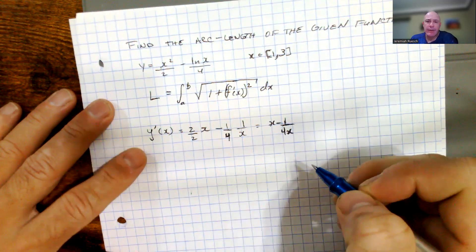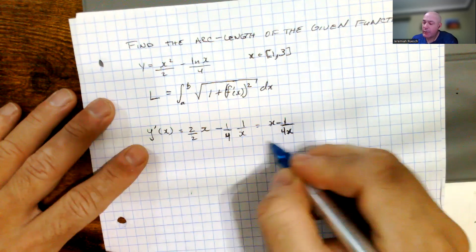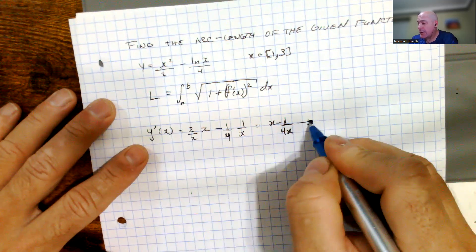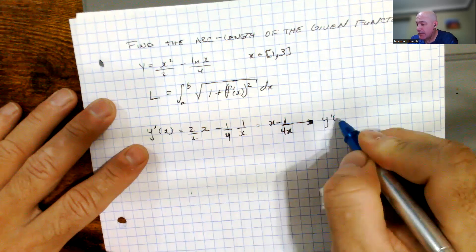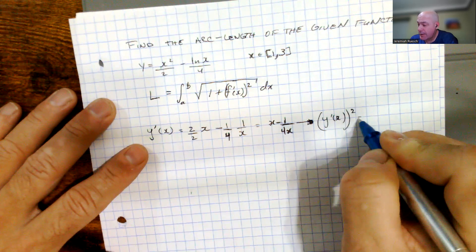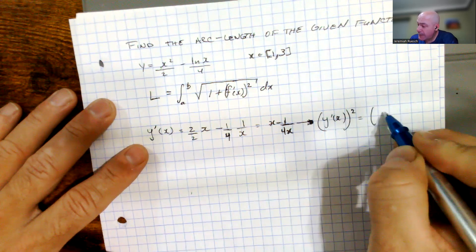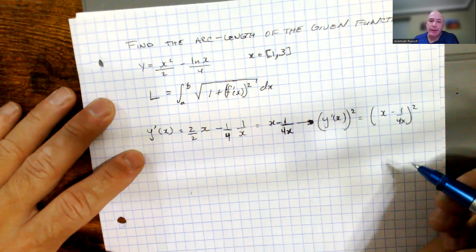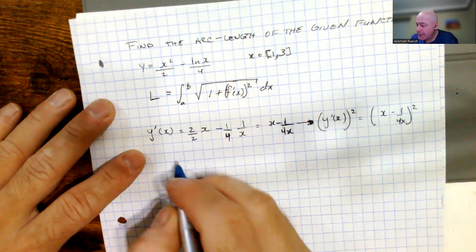So now that we have the y prime, we're going to square this function. So now let's look at what does y prime of x squared look like? Well, that would be x minus 1 over 4x squared.